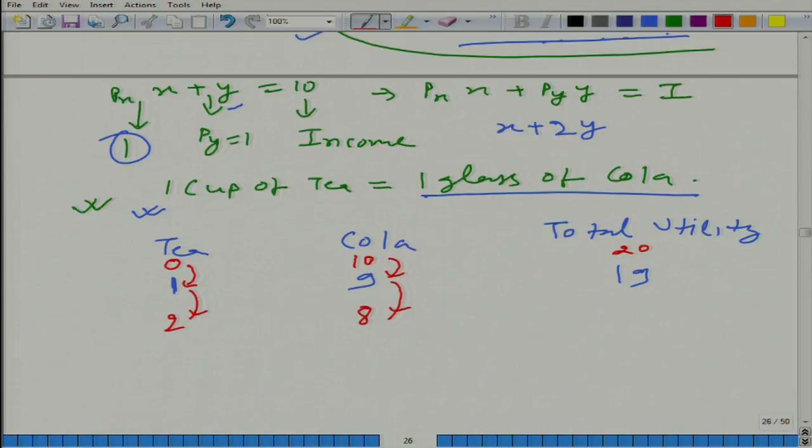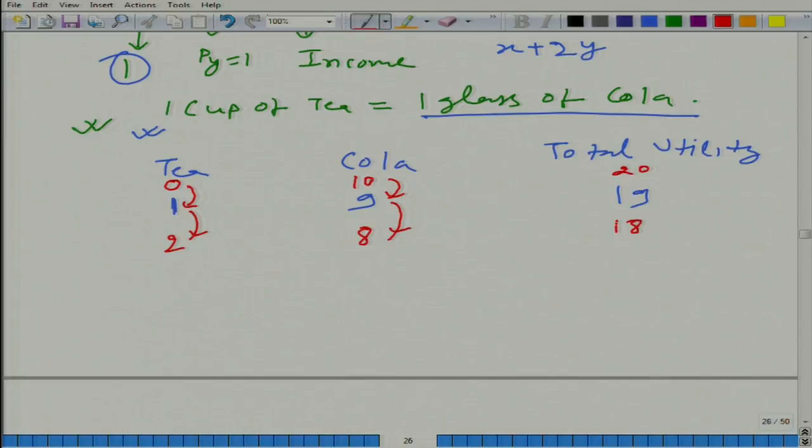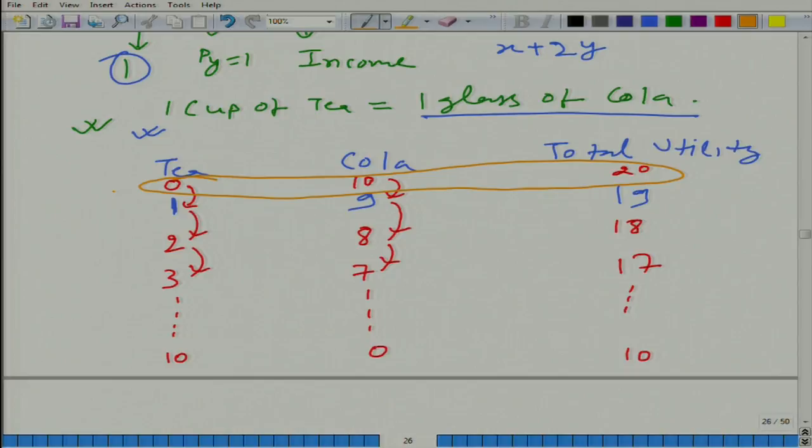It will happen in this fashion and what is going to be the utility here? 18. From 2 to 3, from 8 we will have to decrease it by 1 unit and it is going to be 17. If we keep on doing this, if we have 10 units of tea, then we will have 0 units of cola and we will get 10 units of utility. We want to maximize our utility. Which bundle should we pick? 0, 10. This is the bundle that we should be selecting because 0, 10 bundle leads to maximum possible utility.